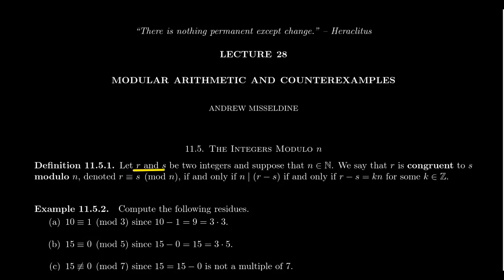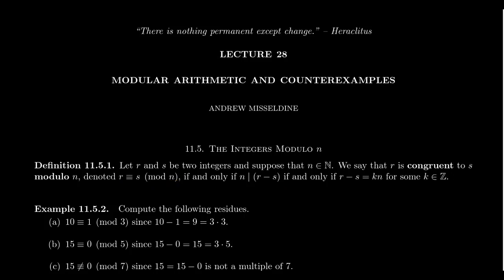So what is the relation? We say that two integers r and s — which can be positive, negative, or zero — are congruent to each other modulo n, often abbreviated as mod n. This is denoted r ≡ s (mod n), and it happens if and only if n divides their difference r minus s. That means there exists some integer k such that r minus s equals k times n. So r is congruent to s exactly when r minus s is a multiple of the modulus.